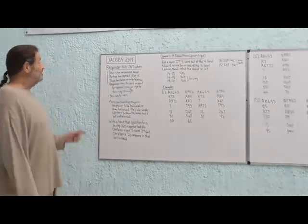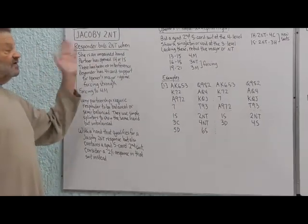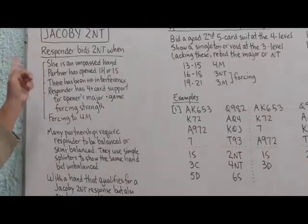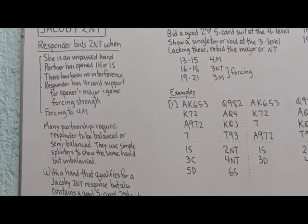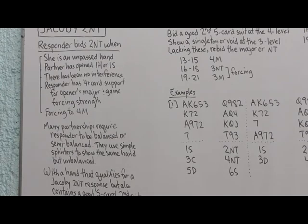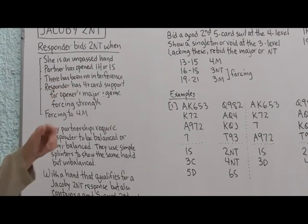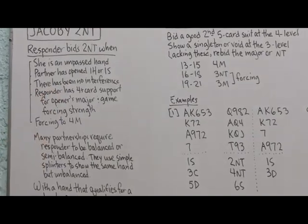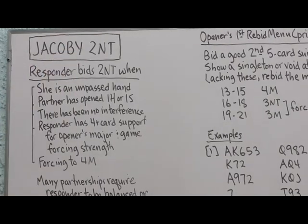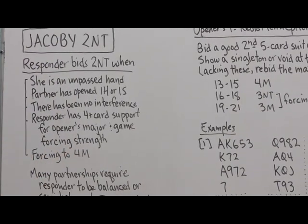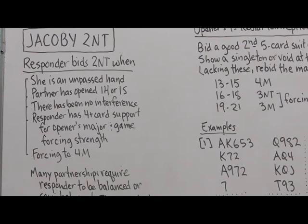The Jacoby 2 No Trump bid is a 2 No Trump call after one heart or one spade. When the responder is an unpassed hand, partner has opened one heart or one spade, therefore has opened in the first or second seat for an unpassed hand. There has been no interference. My right-hand opponent has not bid, so I can bid two No Trump. Responder has four-plus card support for openers' major and game-forcing strength, and this bid, two No Trump after one heart or one spade, is forcing to four of a major.